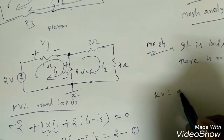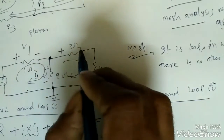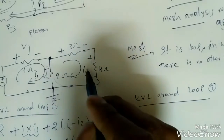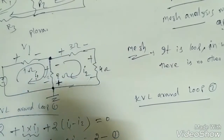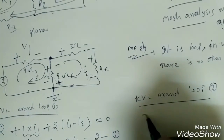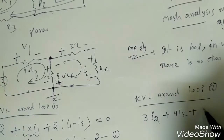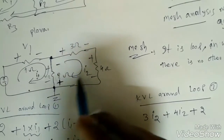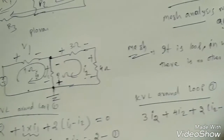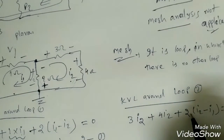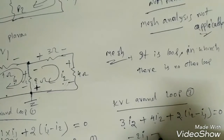For KVL around loop 2 (mesh 2), when in this loop I2 is the dominant current. Writing Ohm's law for each element: 3 times (I2 minus I1) for the shared 3 ohm branch, plus 4 times I2, plus 2 times (I2 minus I1) for another shared branch. Rearranging: minus 2I1 plus 9I2 = 0. This is equation 2.